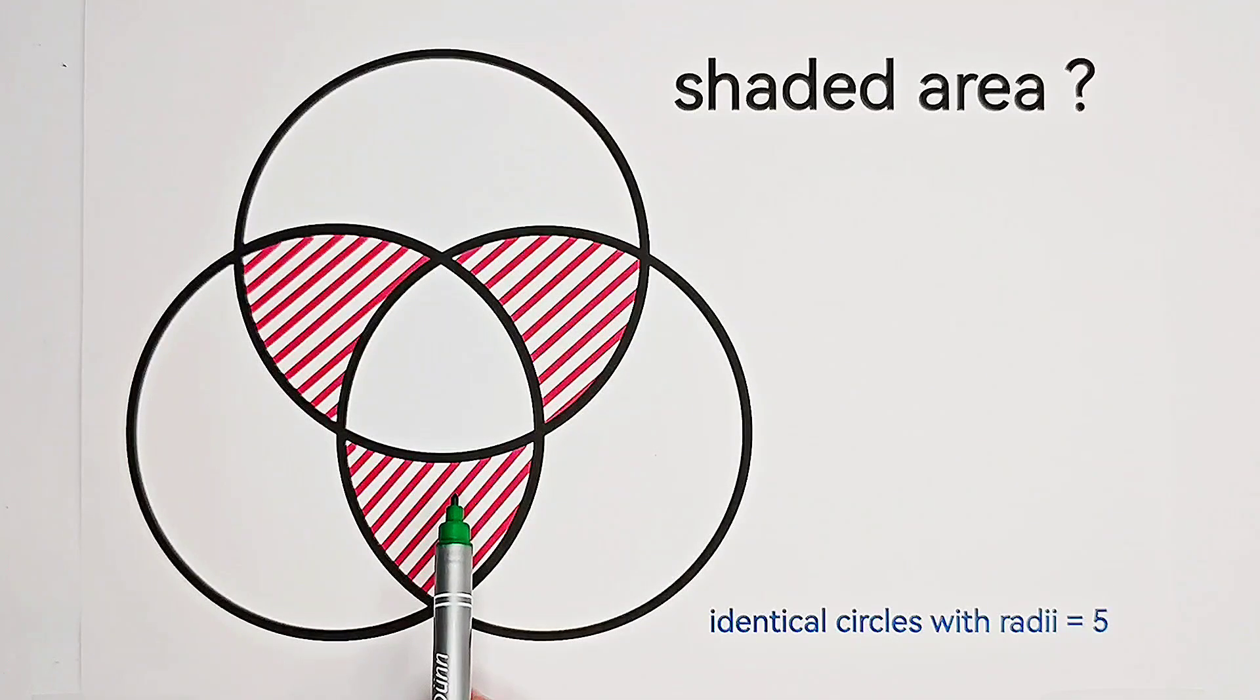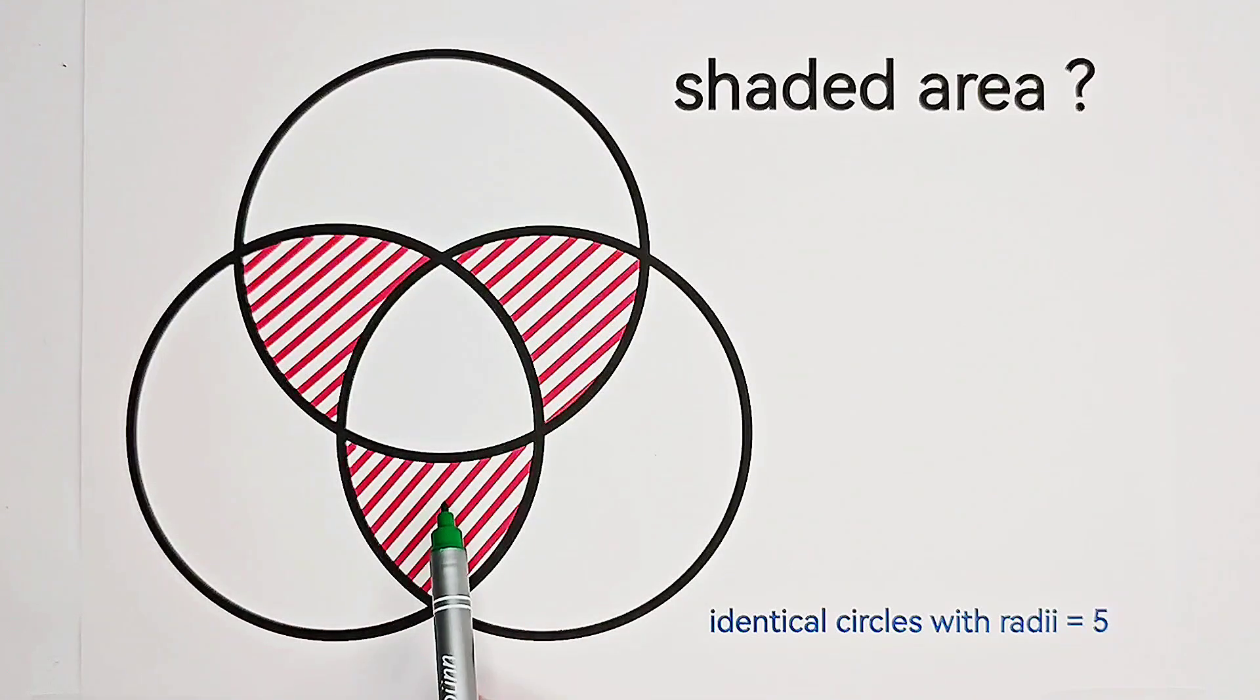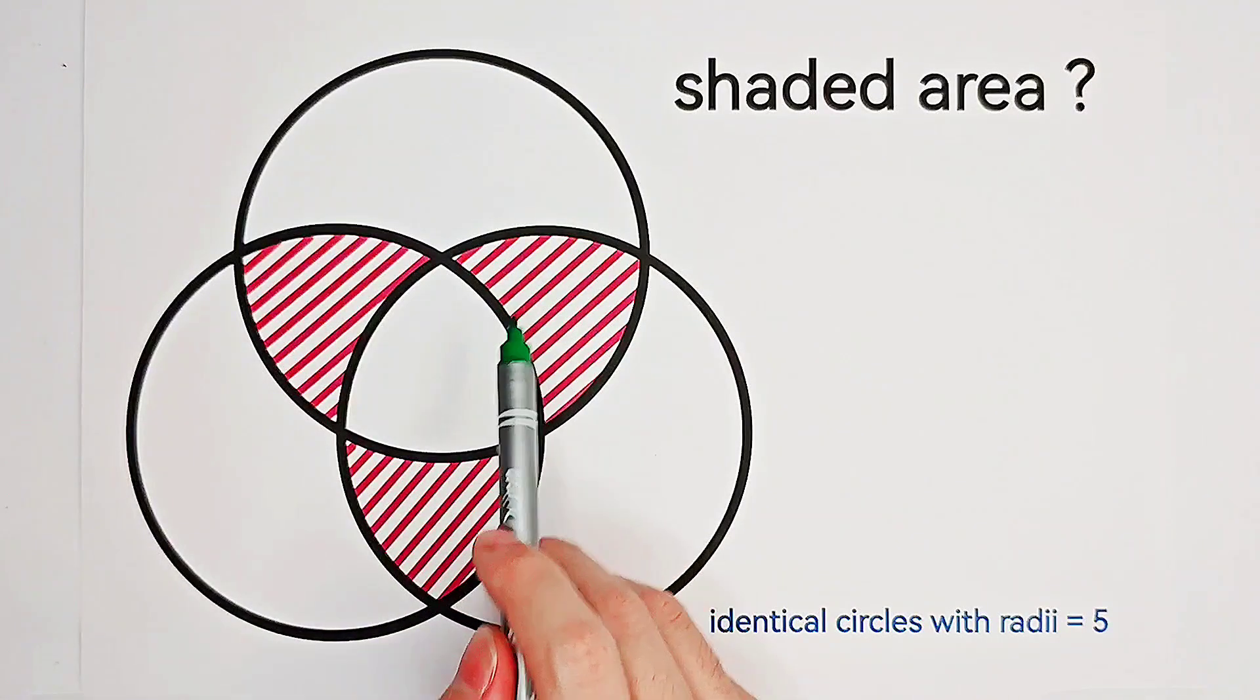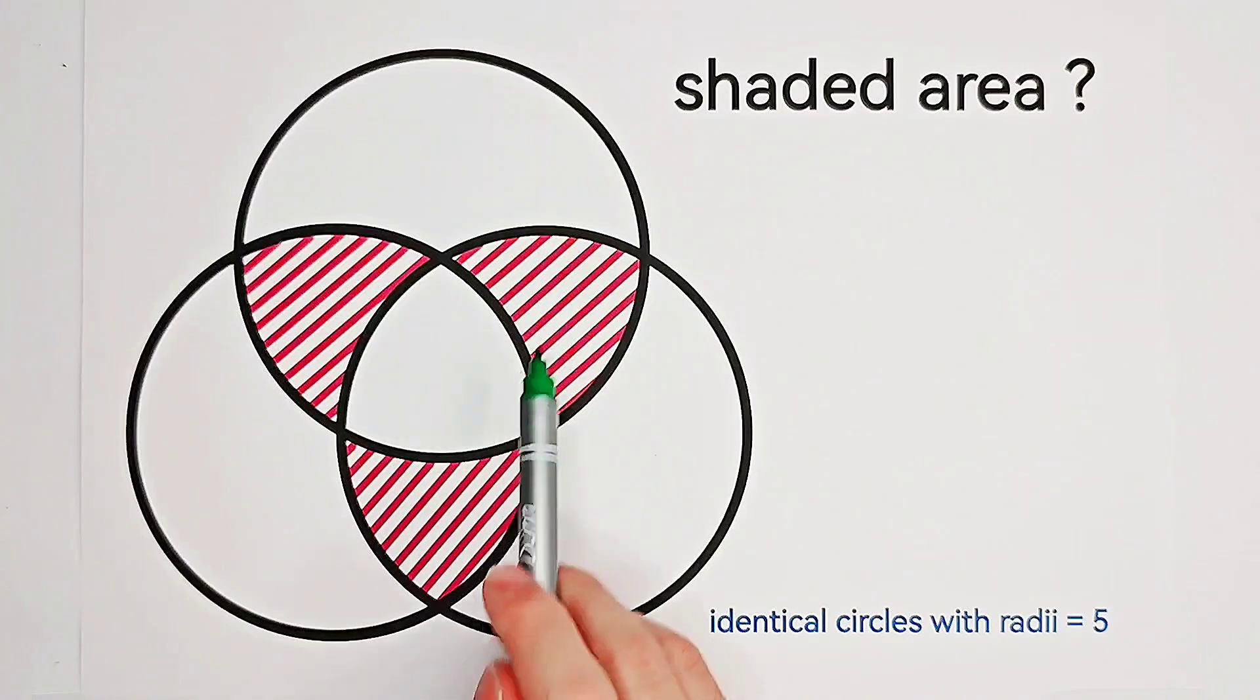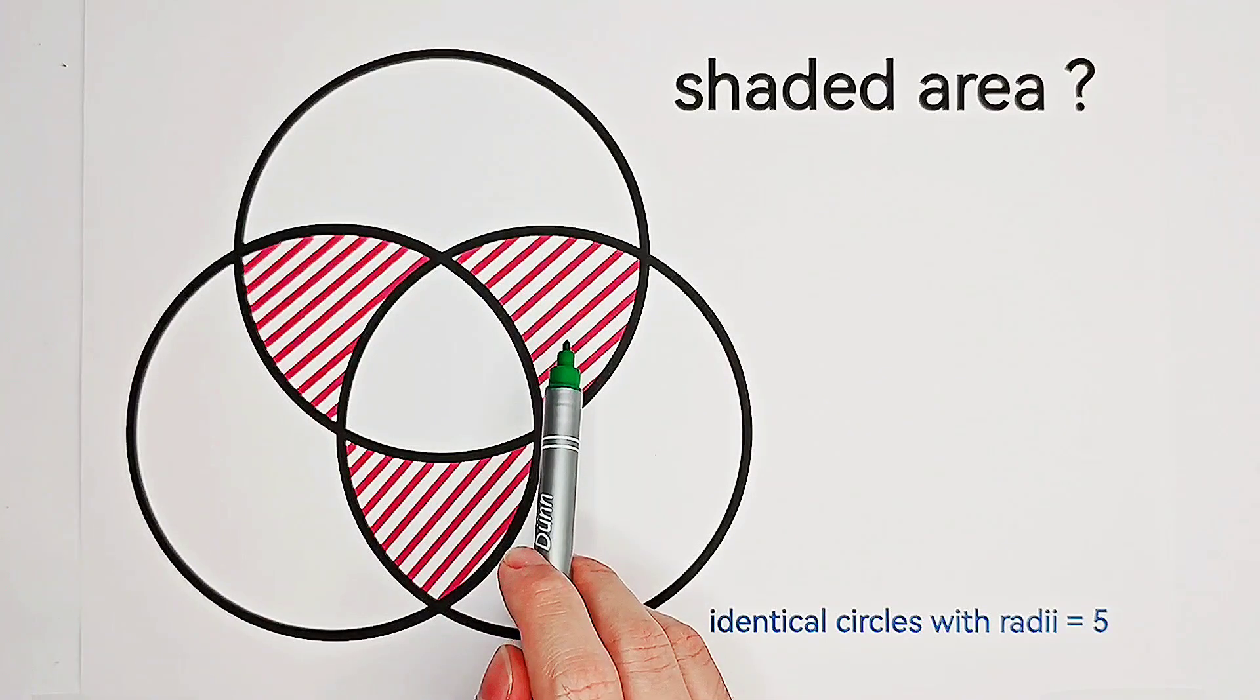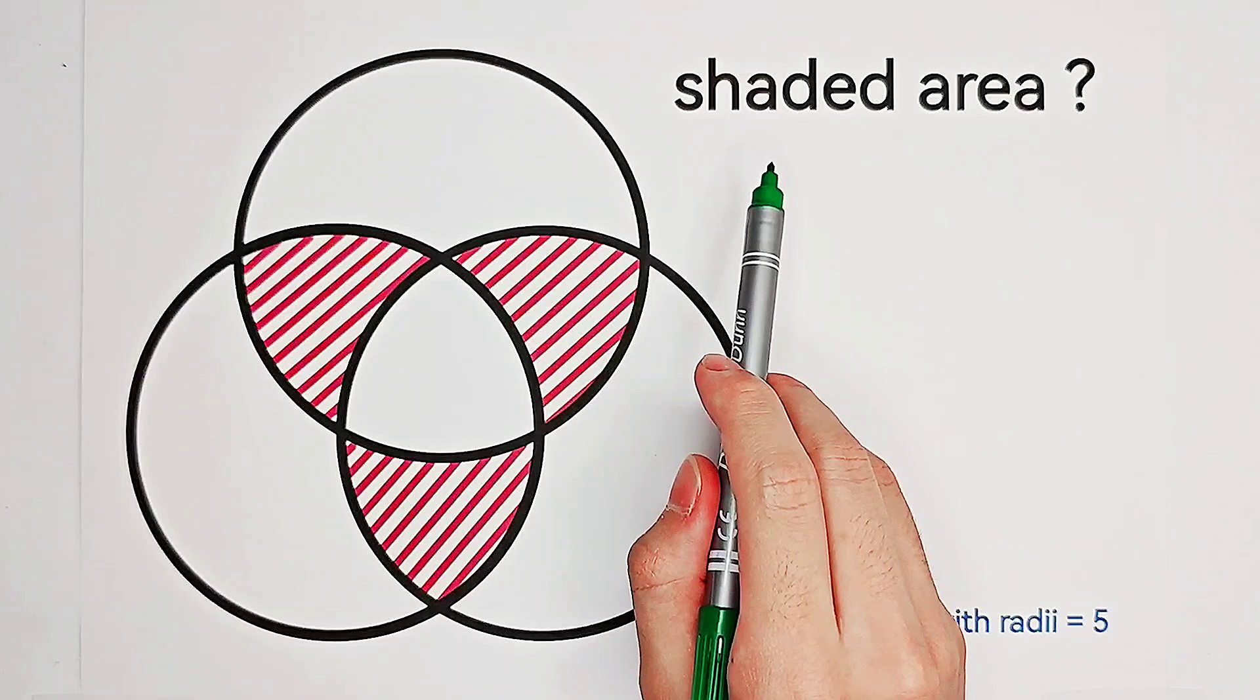You can easily find out that the shaded area contains three identical parts. This one, this one, and this one. So maybe you're going to say, if we can solve for the area of one part, then multiply it by 3, we get the total shaded area.